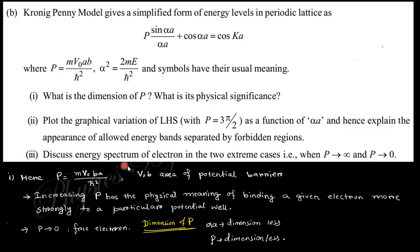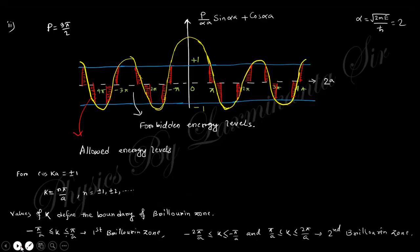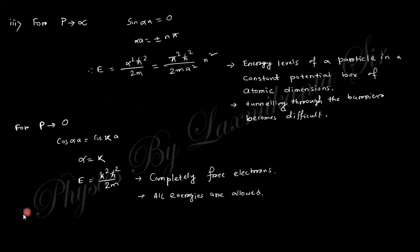For P tends to infinity, the third question was to discuss the energy spectrum in extreme cases: P tends to infinity and P tends to zero. For P tends to infinity, sine alpha times a must be zero, so energy is like that. This is the energy levels of a particle in a constant potential box. When P tends to zero, the energy is like that for free electrons.